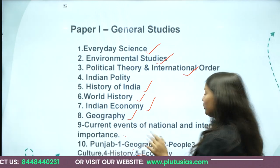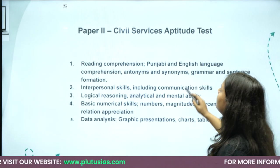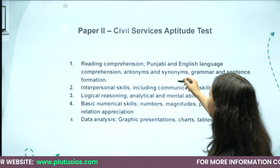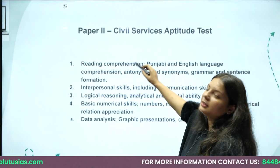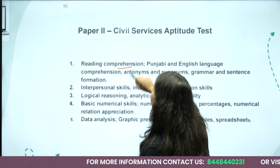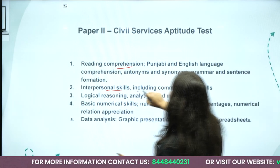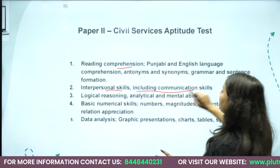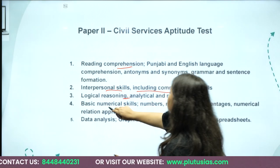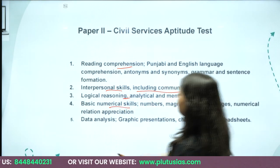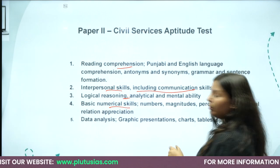The second paper is CSAT (aptitude). It covers Reading Comprehension, Interpersonal Skills including Communication Skills, Logical Reasoning, and Basic Numerical Skills — all these questions come from CSAT.